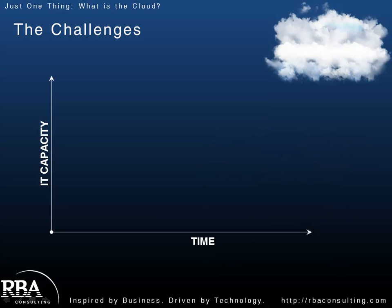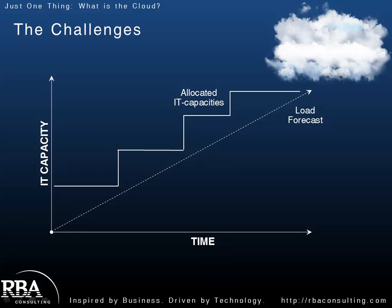To first understand what the cloud is, we need to understand the current challenges we're facing in IT. A lot of this has to do around capacity, or the ability to handle variable loads. If we take this little chart here and look at time on the bottom and IT capacity running vertically, and we predict this kind of load forecast — maybe it's over a year — what we then usually do in traditional IT is we try to buy capacity for that, so we have a capital expenditure and we go buy a lot of hardware.